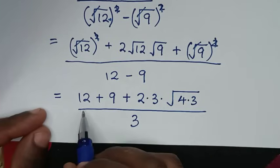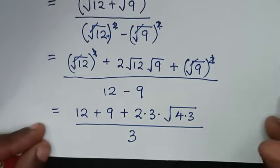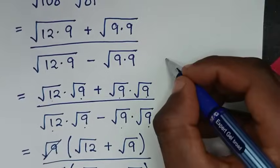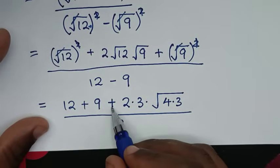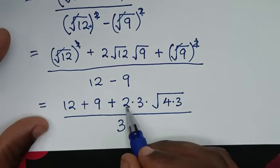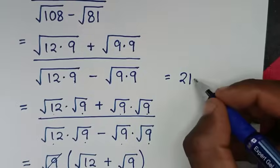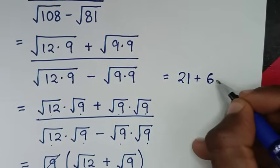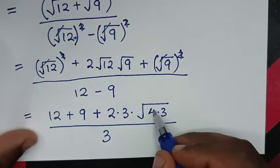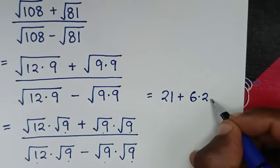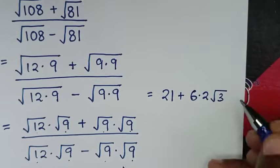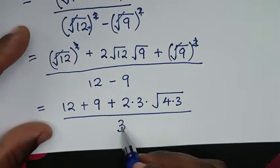So the numerator becomes: 12 plus 9 is 21, plus 6 times square root of 12. Since square root of 4 is 2, this gives 6 times 2 times square root of 3, which is 12 times square root of 3. The expression becomes (21 plus 12 times square root of 3) over 3.